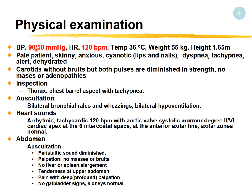Physical examination: blood pressure very low at 90/50 mmHg. Heart rate 120 BPM — if you calculate the shock index (heart rate divided by systolic pressure), it's over 1. Temperature is okay. Weight 55 kg, height 165 cm — a little skinny. Patient is pale, skinny, anxious, cyanotic at the lips and nails, dyspneic, tachypneic, alert, and dehydrated.